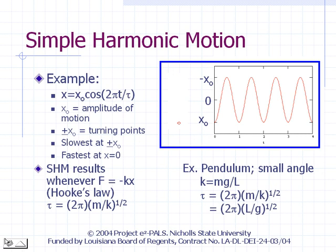Shown here is an example of an object whose motion is considered to be simple harmonic. The location x is given by x0 times the cosine of 2 times pi times t over tau. Examine the graph on the right — can you identify the period? The period is one unit of time. Note that the plot from t equals zero to t equal to one repeats from t equal to one to t equal to two.